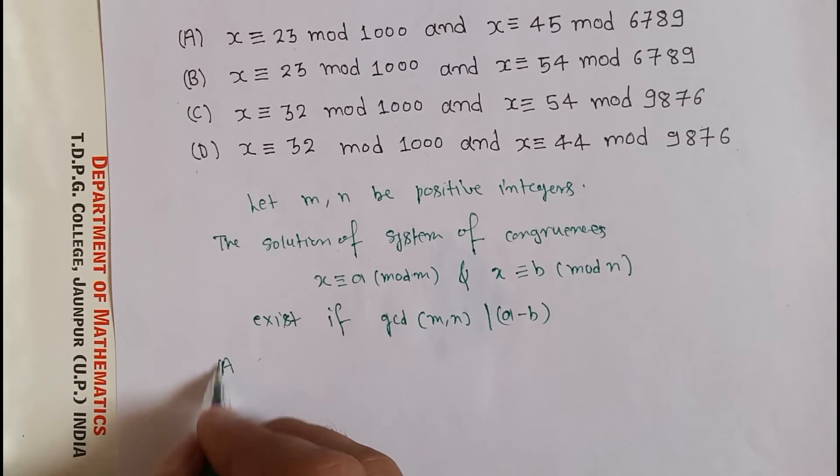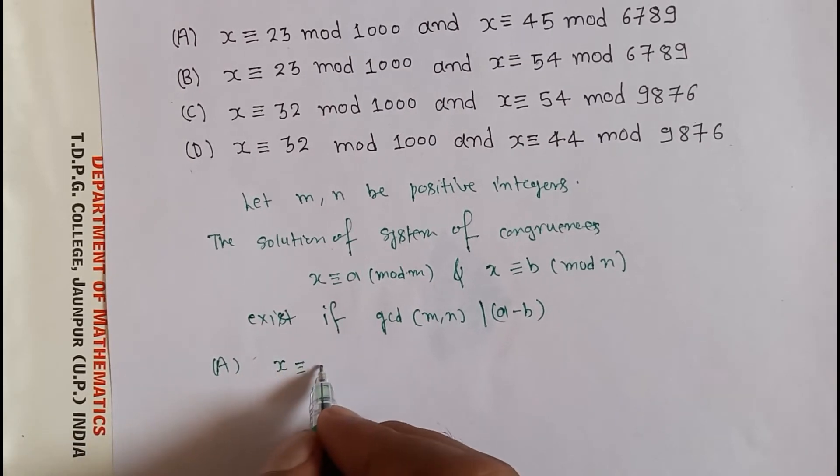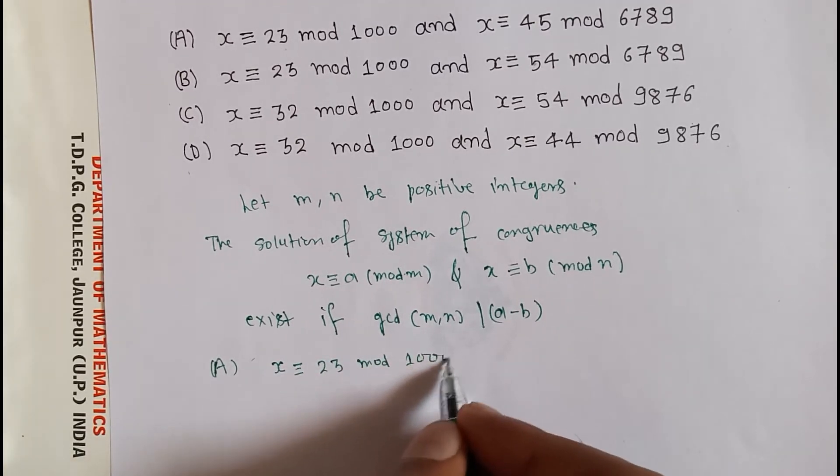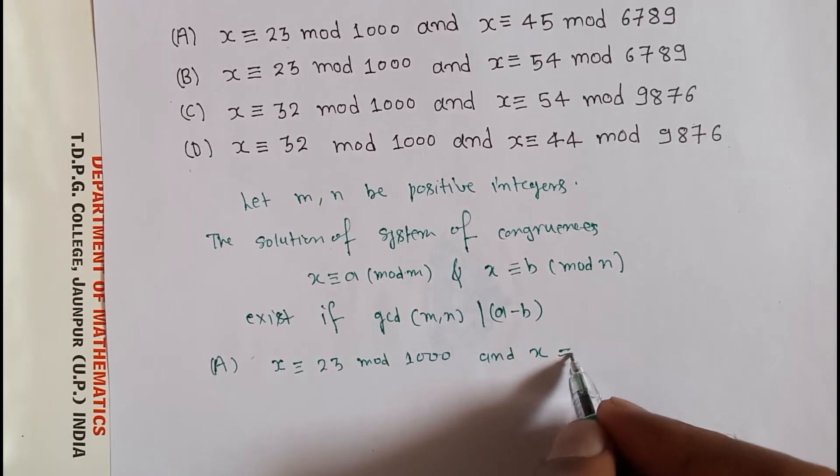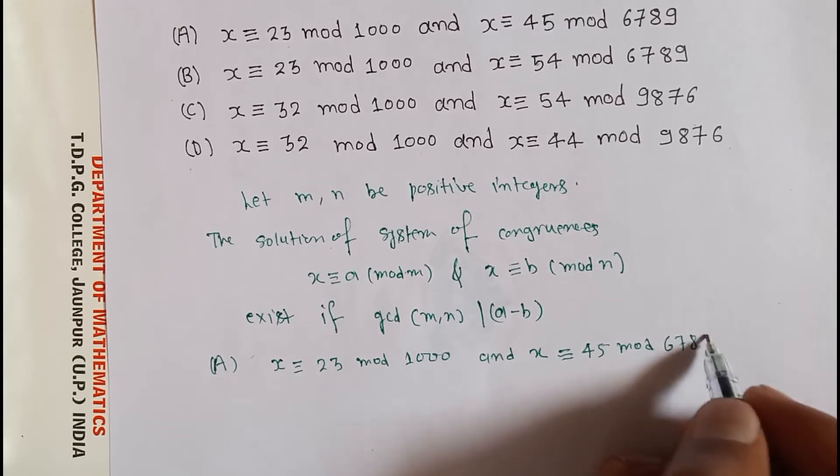From option A, we have x congruent to 23 mod 1000 and x congruent to 45 mod 6789.